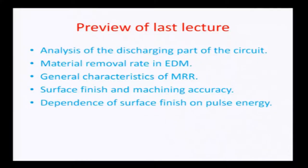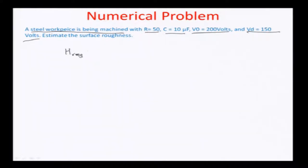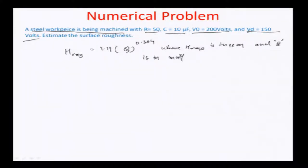Today we will look at a numerical estimation of surface roughness. The problem represents a situation where a steel workpiece is being machined with circuit parameters: resistance R = 50 ohms, capacitance C = 10 microfarads, total operating voltage of 200 volts, and discharge voltage of 150 volts. We need to estimate the surface roughness, which is the H_RMS value. From the previous lecture, H_RMS = 1.11 × q^0.384, where H_RMS is in microns and q is in mm³/min.